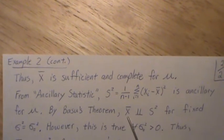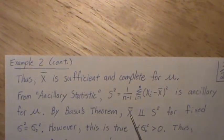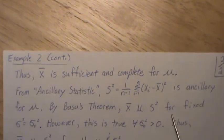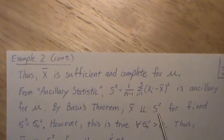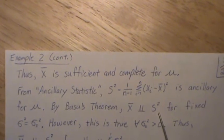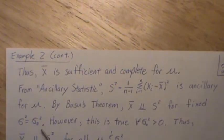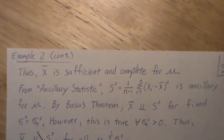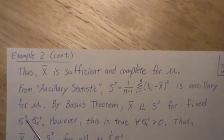Now by Basu's theorem, the sample mean and the sample variance, this is a complete sufficient statistic and this is ancillary. So that means they're independent for a fixed sigma not, you know, sigma not squared.